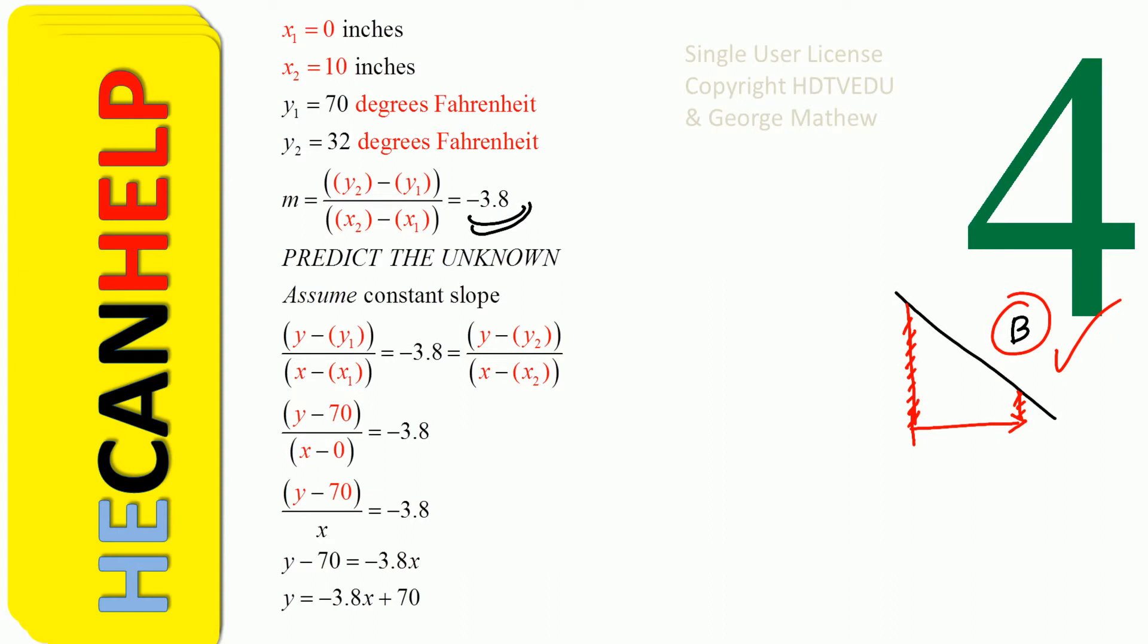By definition, slope is y2 minus y1 over x2 minus x1. To predict what happens in the middle, is there anything we can do? The answer is yes. So let's choose that unknown as x and y. Do not forget, the slope of a line is a constant, so it doesn't matter which points you choose.